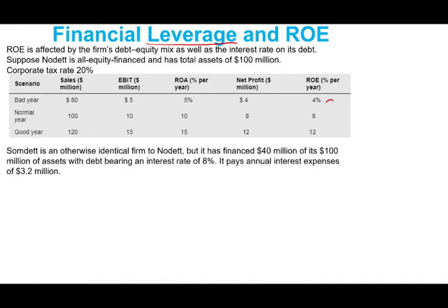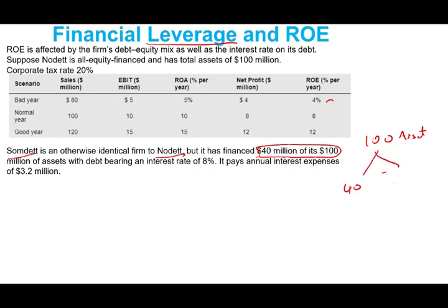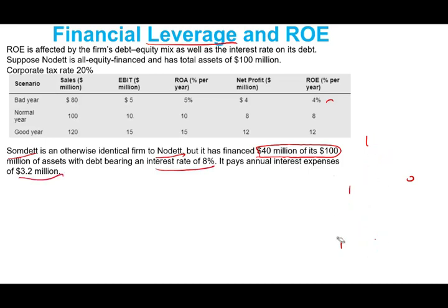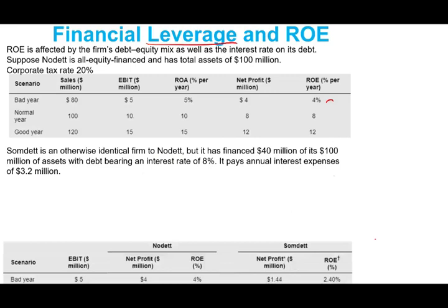To compare, let's look at a company with some debt. It's identical to no debt but has financed 40 million of its 100 million in assets with debt, so 40 million is debt and 60 million is equity. When you have debt, you have to pay interest — your profit will be shared with the debt holders. The interest rate is 8%, and it pays annual interest expense of 3.2 million.